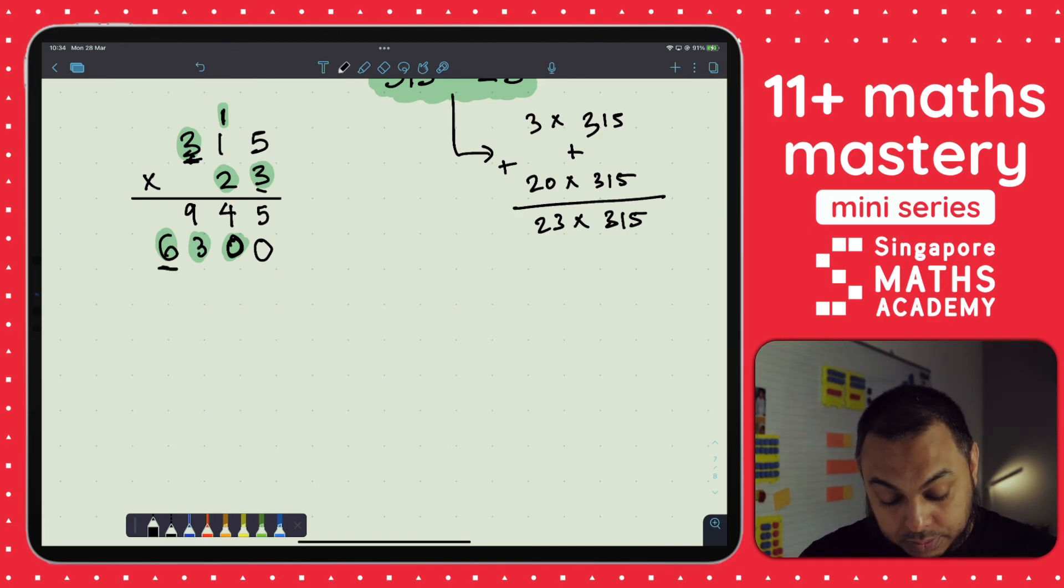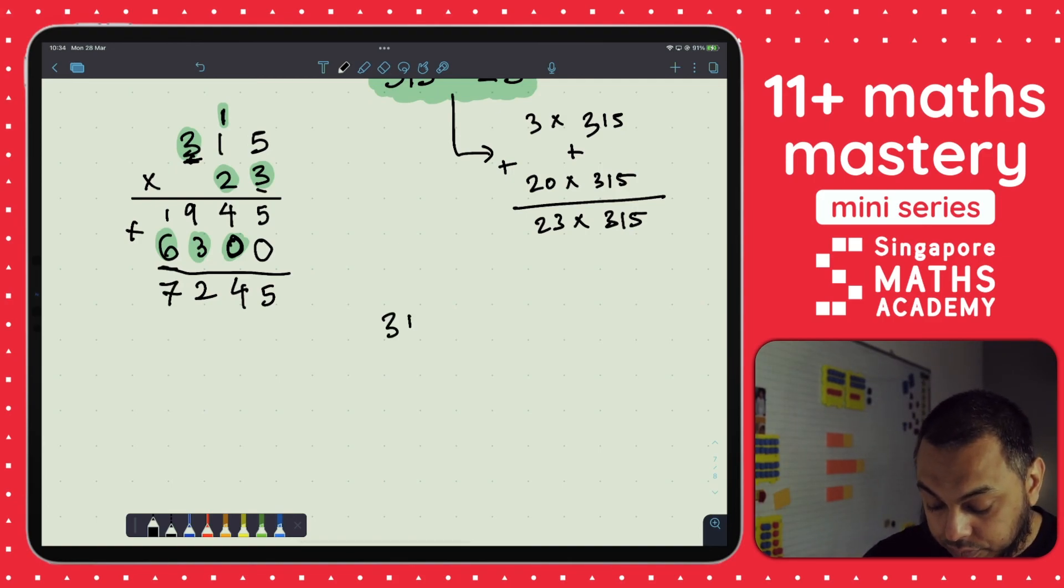And when we add this together, we'll get 5 ones, 4 tens, 900 add 300 is 1,200. So the 200 will go in the hundreds column and the 1,000 I'll add on to the 6,000, which makes it 7,000. So 315 multiplied by 23 is equal to 7,245.